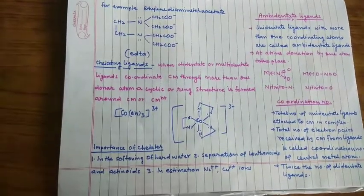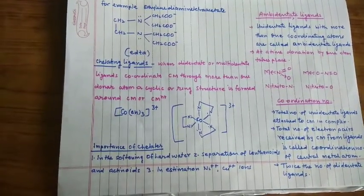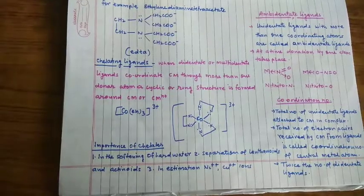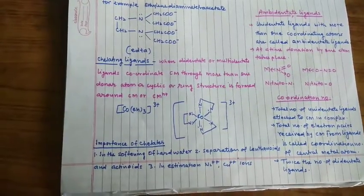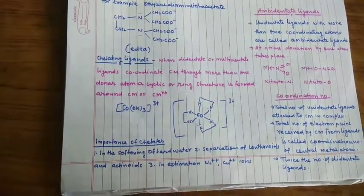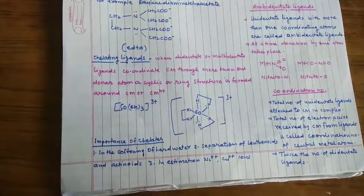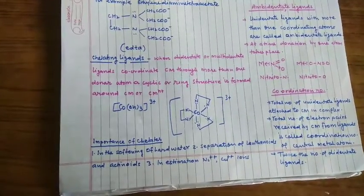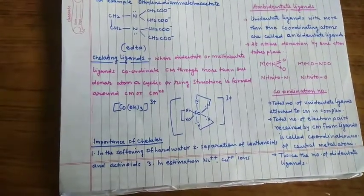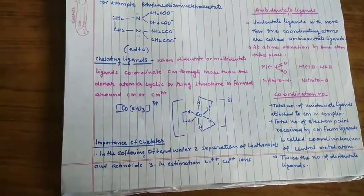तो जब एक ही ligand कई donor atom से एक साथ coordinate करेगा तो central metal के around एक cyclic structure ring के तरह structure बन जायेगा जिसको हम chelate ring बोलते हैं और ligand को chelating ligand कहा जाता है।